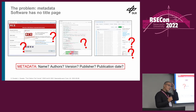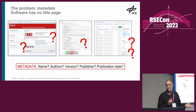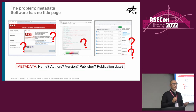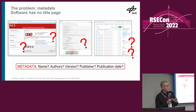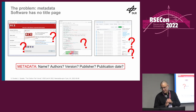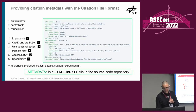The problem that the citation file format tries to solve is that there is no title page for software. Looking at software, we may have no idea what the actual name of the software is - it could be 'analysis.py', which is not a very specific name. We probably have no idea who the authors are as compared to the contributors or committers if we look at the GitHub or GitLab repository, but those two can be completely different. We may have no idea what the version is, the publisher, etc. All this information is not easily found.